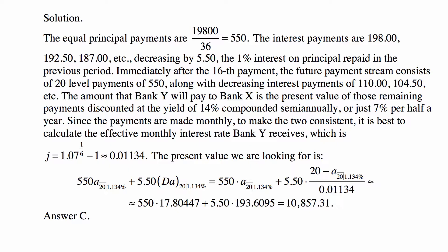The amount that Bank Y will pay to Bank X is the present value of those remaining payments, discounted at the yield of 14% compounded semiannually, or just 7% per half year. But the payments are made monthly, so to make the two consistent, we calculate the effective monthly interest rate Bank Y receives, which is 1.07^(1/6) − 1. The reason for that is because (1 + j)^6 must equal 1.07, where j is the monthly rate.